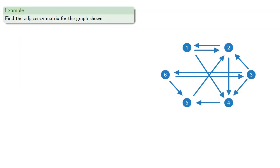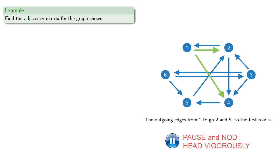For example, we might want to find the adjacency matrix for the digraph shown. The outgoing edges from 1 go to vertices 2 and 5, so the first row will be all 0s except for the 2nd and 5th positions.